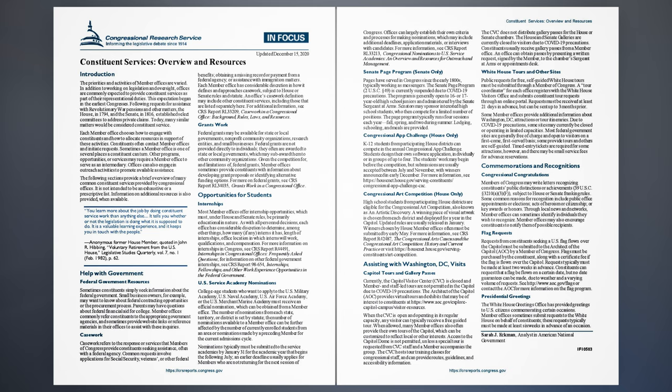The priorities and activities of member offices are varied. In addition to working on legislation and oversight, offices are commonly expected to provide constituent services as part of their representational duties. This expectation began in the earliest Congresses. Following requests for assistance with Revolutionary War pensions and other matters, the House in 1794 and the Senate in 1816 established select committees to address private claims. Today, many similar matters would be considered constituent service.